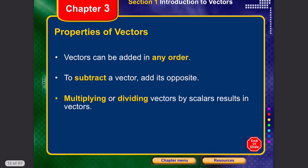Remember the properties: first, vectors can be added in any order. To subtract a vector, we add its opposite vector. Let's take an example of that.